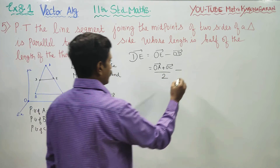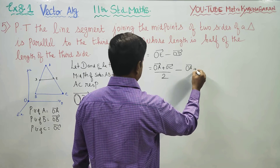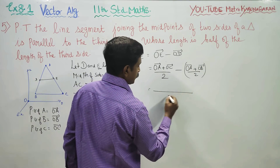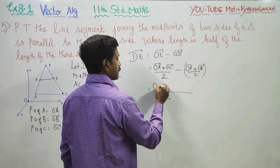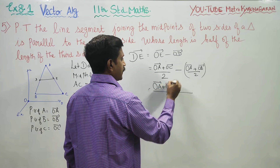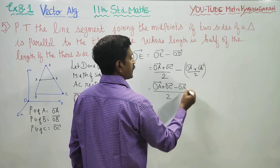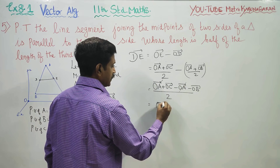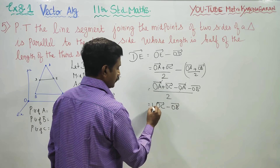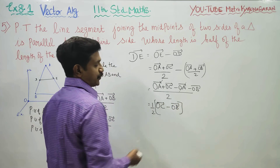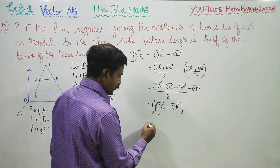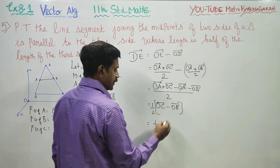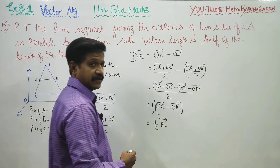DE vector equals (OA + OC)/2 minus (OA + OB)/2. Taking LCM of 2: OA + OC − OA − OB, all over 2. OA cancels. You will be getting OC vector minus OB vector by 2. OC minus OB is end point minus starting point, so this is my BC vector. Therefore DE vector equals (1/2) BC vector.